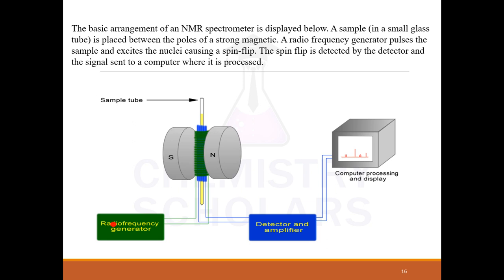Let us study the basic setup. You take the sample and place it between two strong magnets or between the poles of a strong magnetic field. Then you apply radio frequency, and due to this there is flipping — spin flip. This flipping is detected by the detector and you get a signal. The computer processes the signal and you get a display which is the NMR spectrum.